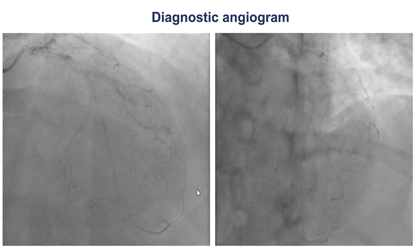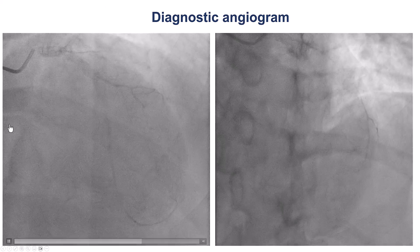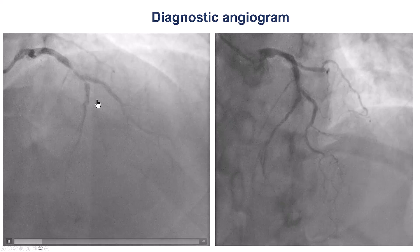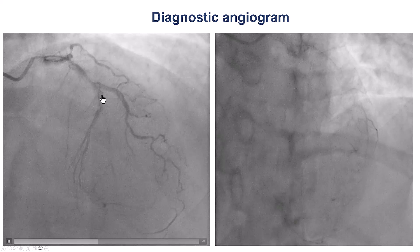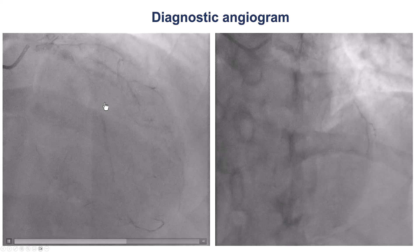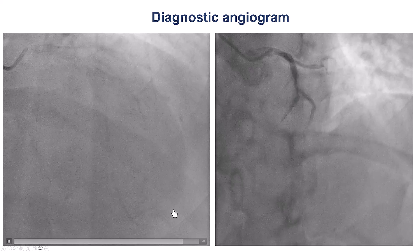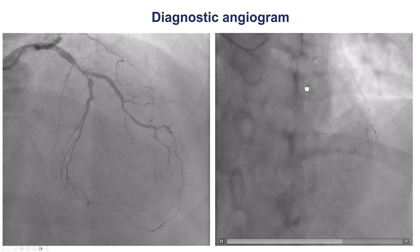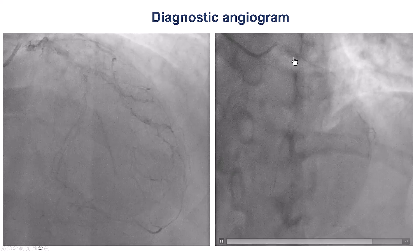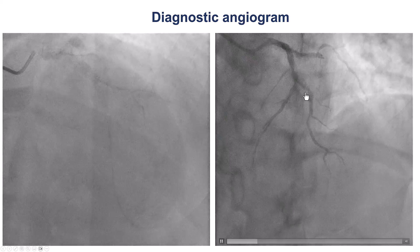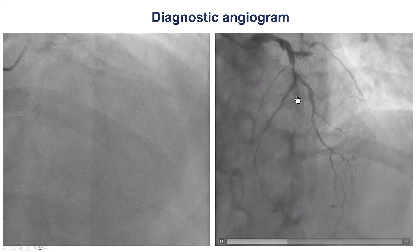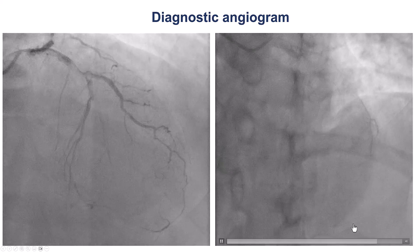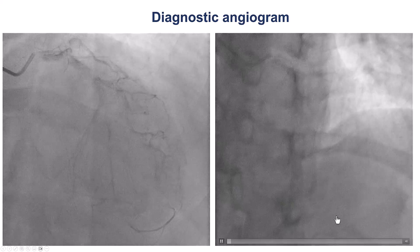This is the diagnostic angiogram. There is a mid-LAD CTO with heavy calcification, a septal coming close to the proximal cap, and the distal vessel is filling through ipsilateral epicardial collaterals. On the LAO cranial view, we have the LAD-CTO with a blunt but clear proximal cap and epicardial collaterals to the diagonal.